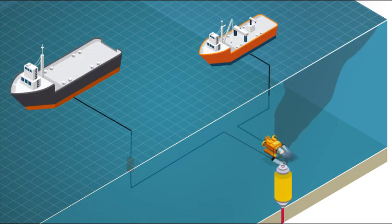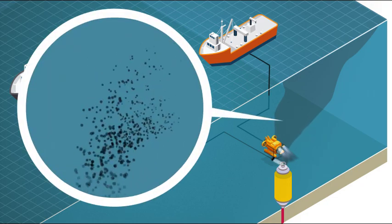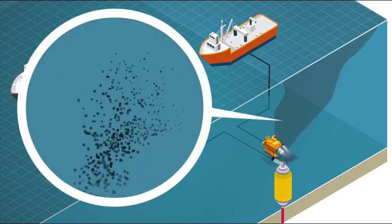New methods for injecting dispersants directly into the subsea release have been developed. With subsea injection of dispersants, we can greatly increase the percentage of oil that is entrained in the water column as small droplets, preventing the formation of large surface slicks.